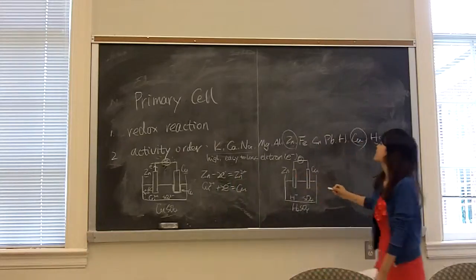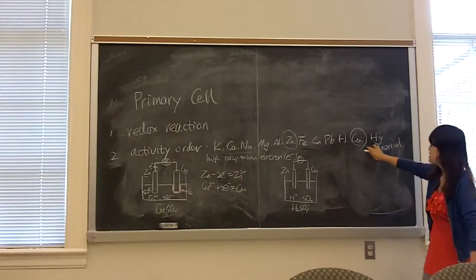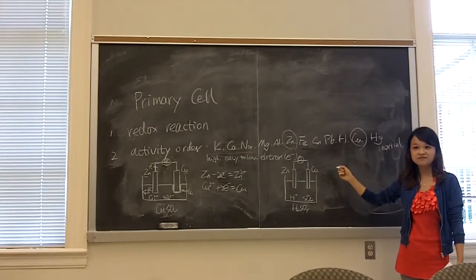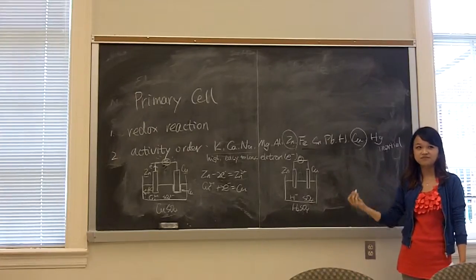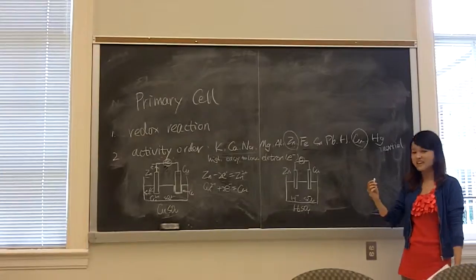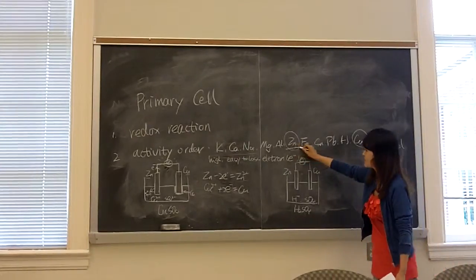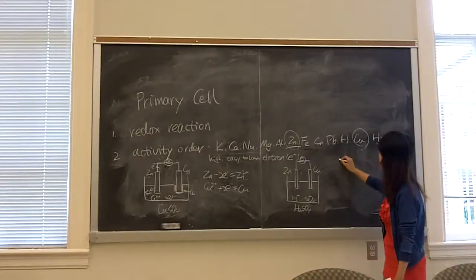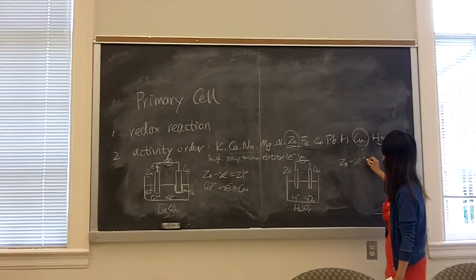So you can look at this order. Who would lose its electron this time? Zinc is going to lose. Yes. Because zinc is active in this element. So zinc is going to lose.